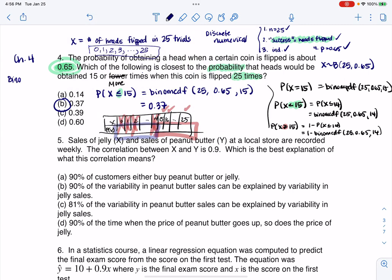So this is chapter four. This is specifically a binomial probability. So I hope that helps. Thanks so much. Bye.